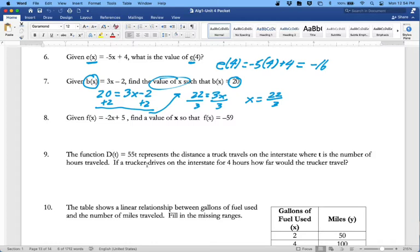Eight: find the value of x so that f of x equals negative 59. We do the same thing. Negative 59 is what I have to get for an answer. That's going to give me negative 64 equals negative 2x. Divide by negative 2, x is 32.